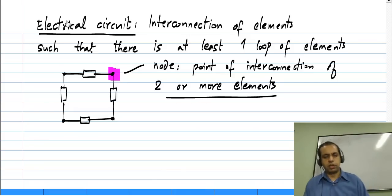Now, what is this definition of electrical circuit? We said that we have to have at least one loop. That is because we want to have some interesting behavior in the circuit.